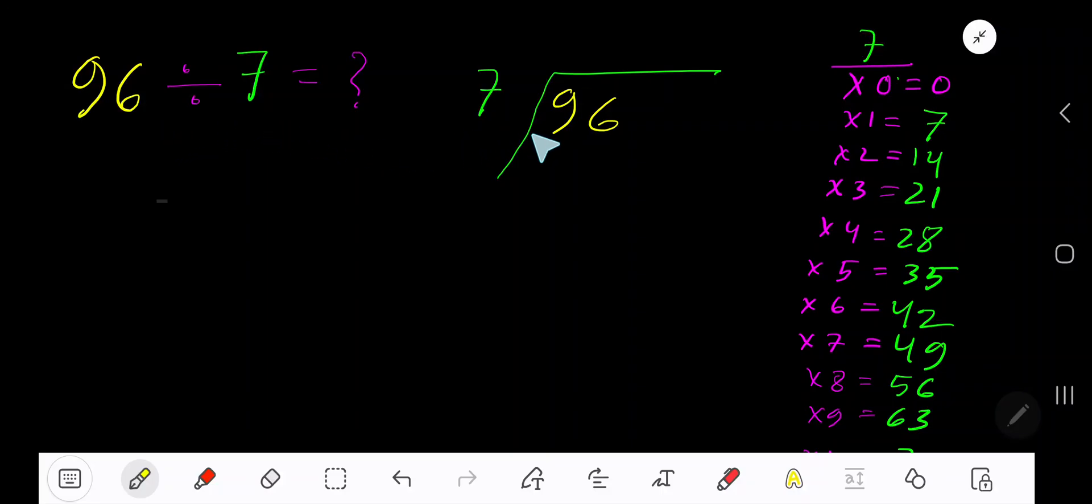96 divided by 7. Here 7 is the divisor, so we need the multiplication table of 7. 7 times 0 is 0, 7 times 1 is 7, 7 times 2 is 14, 7 times 3 is 21. To find the multiplication table of 7, just add 7 with the previous step: 0 plus 7 is 7, 7 plus 7 is 14, 14 plus 7 is 21.